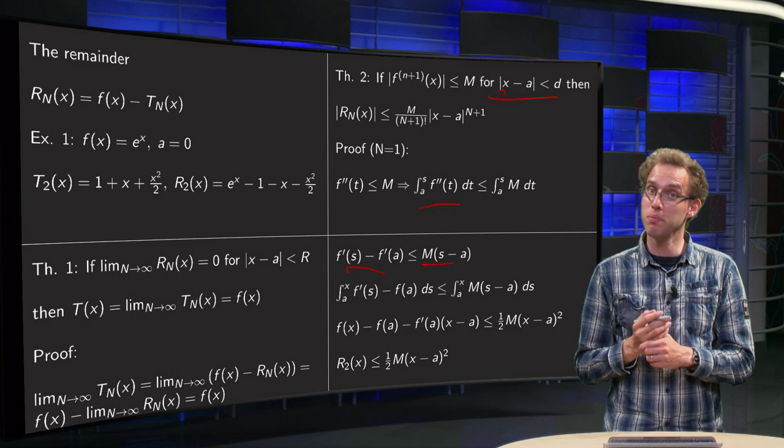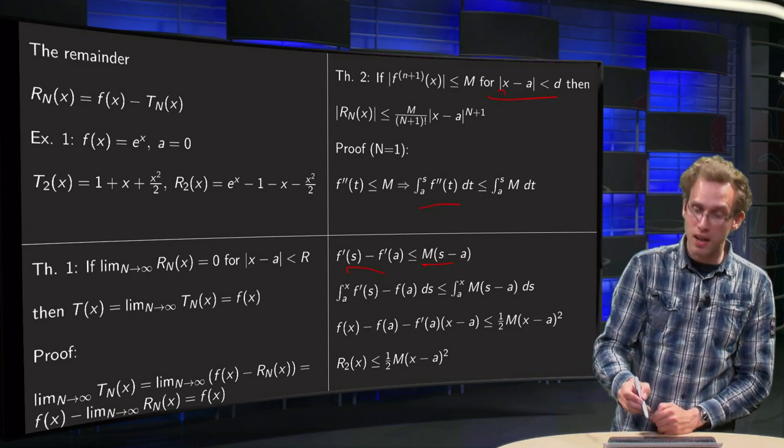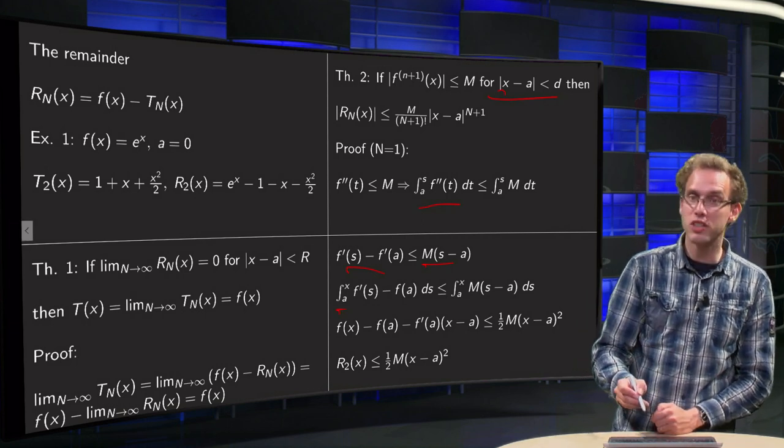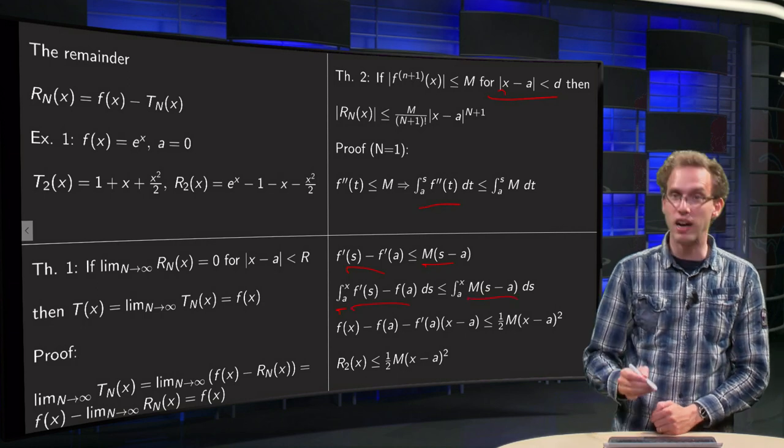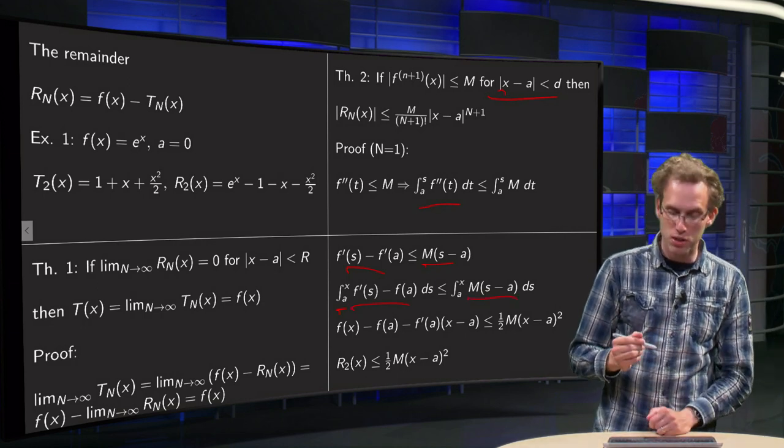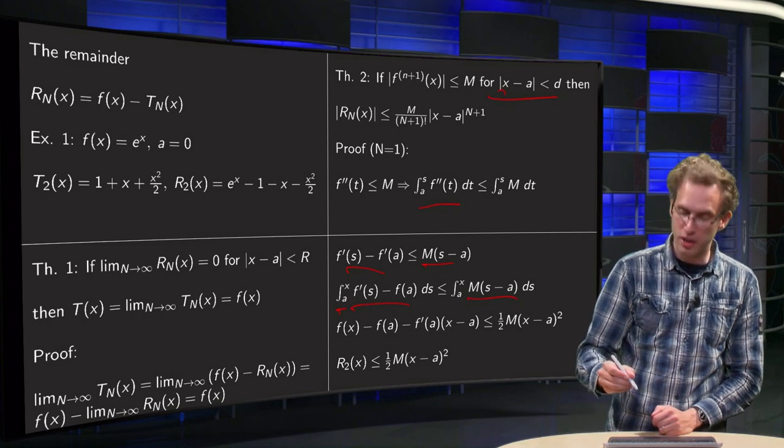Then we integrate left and right from a to s with respect to t, f double prime. Integral on the right hand side is easy because this is a constant, so it's just M times the length of the integration interval.